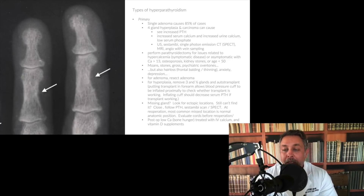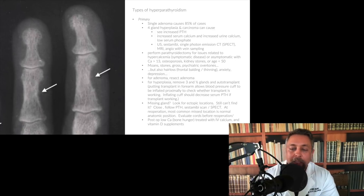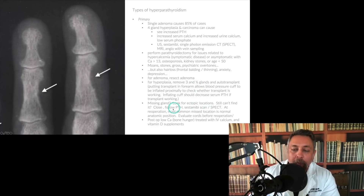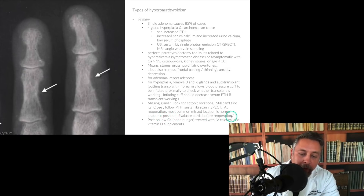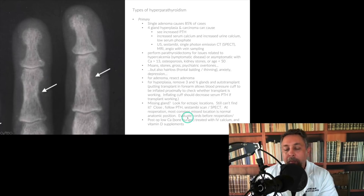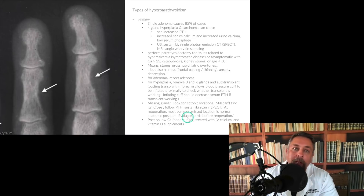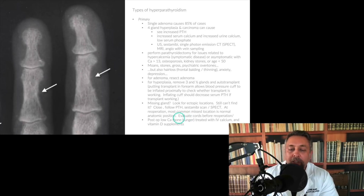If you're missing a gland, look for the ectopic locations. If you still can't find it, close, follow PTH, and perform a sestamibi scan or SPECT CT. At reoperation, remember the most common mislocation is the normal anatomic position. Evaluate vocal cords before reoperation — laryngoscopy will determine whether the cords are functioning adequately.